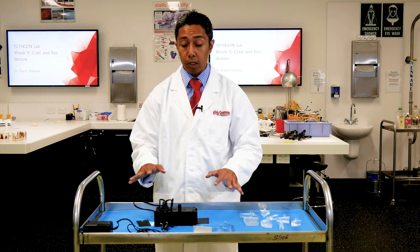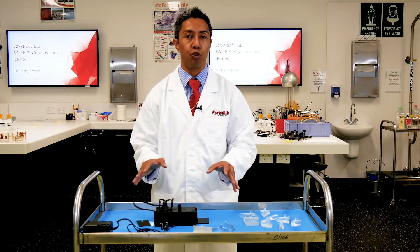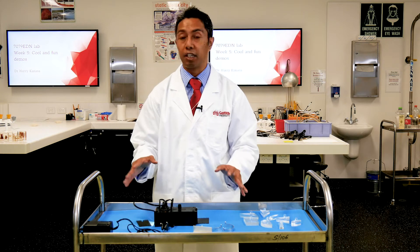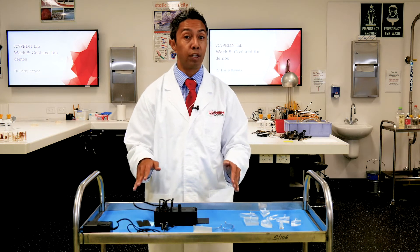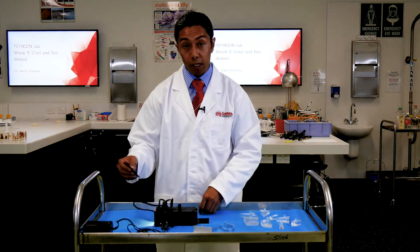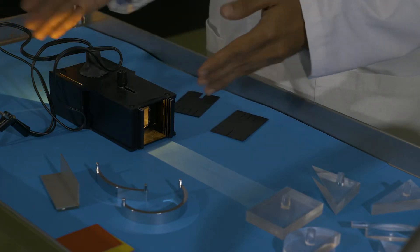Whenever you are doing optics it's always a good idea to have a darkened room. Our room is specially set up with blackout curtains so we can actually turn off the lights like now. Once we turn off the lights the beam actually becomes a lot more evident.